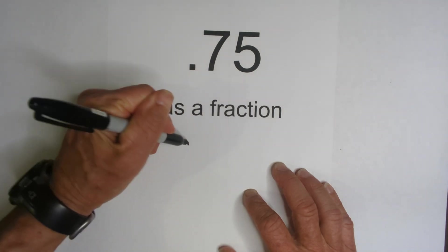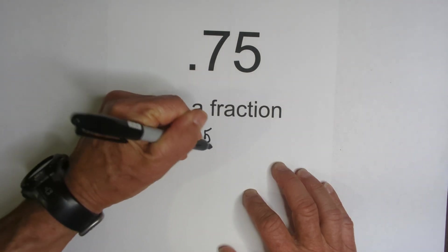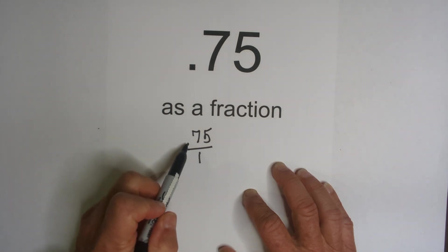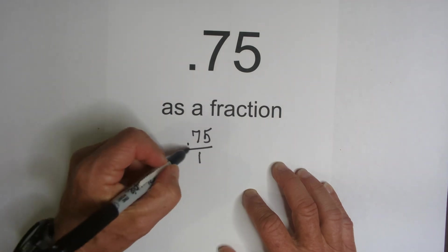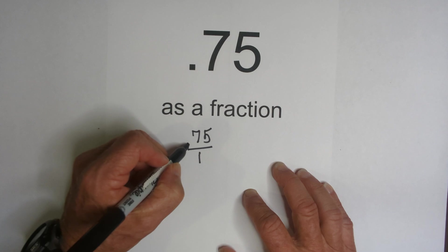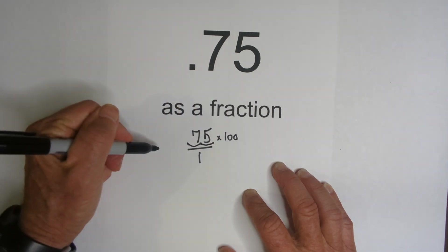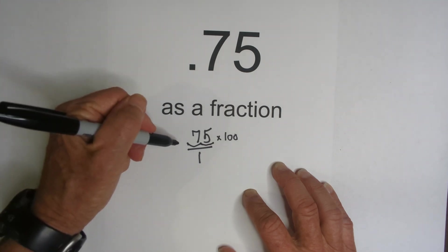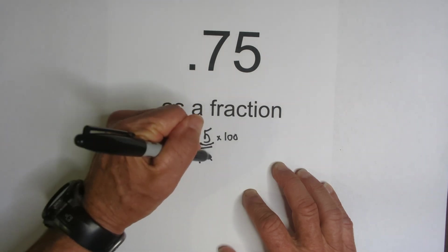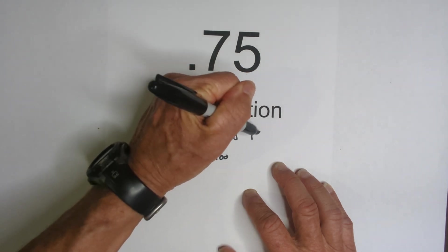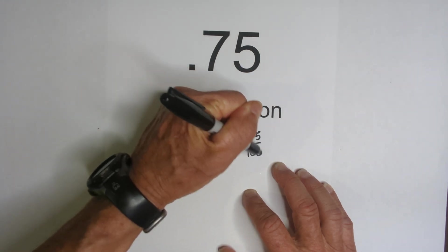So step one is, let's just write it over one. Then what we need is we need to have 75 hundredths a whole number. So we're going to multiply by 100 because we need to move the decimal two places to the right. So we're going to multiply 0.75 or 75 hundredths by 100, numerator and denominator by 100. So that gives us 75 over 100.